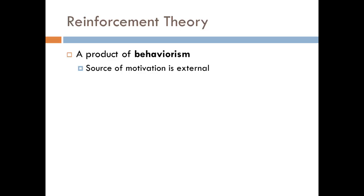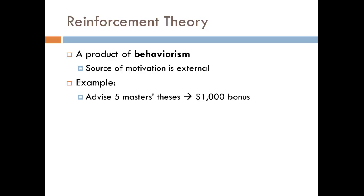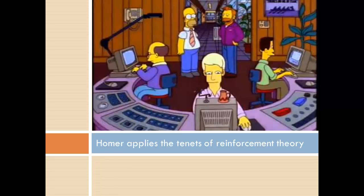Let's take a look at an example. Let's say my department chair says he'll give me a $1,000 bonus if I serve as the advisor to five master's student theses this year, but if I don't do this, there's no bonus. This is known as a contingent reward because the reward is contingent on a certain behavior on my part. If I engage in that behavior, I get the reward; if I don't, no bonus. Presumably, I would be more likely to advise those five theses with this contingent reward than without it. It's pretty simple.